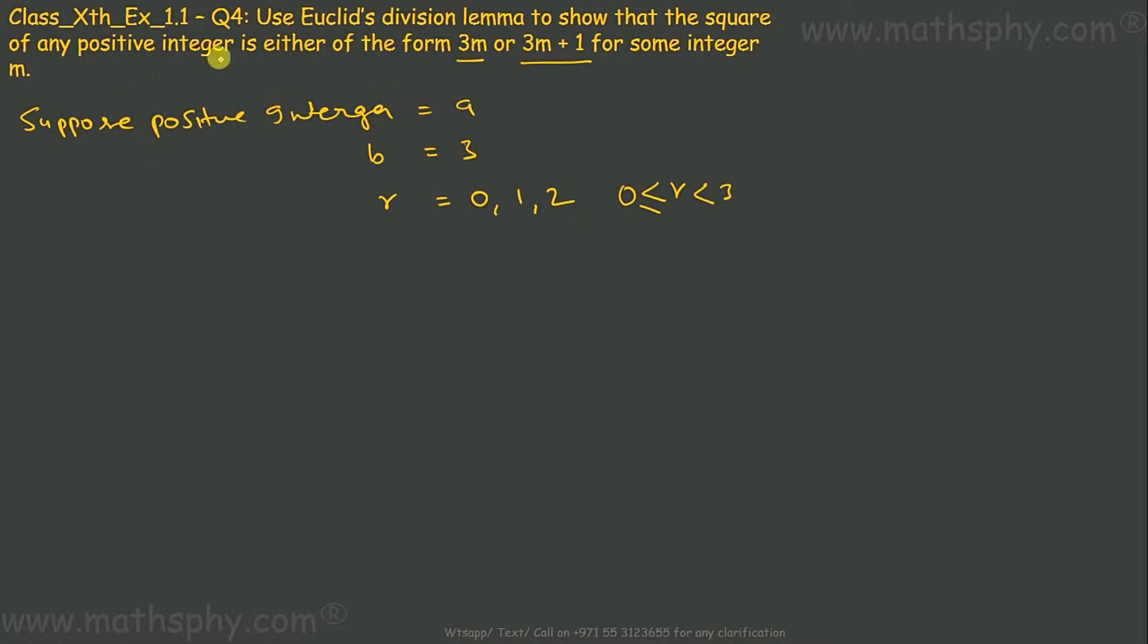For the square of any positive integer, let's take A. This A can be written as BQ plus R. So A would be 3Q plus R, where R is 0, R is 1, or R is 2.